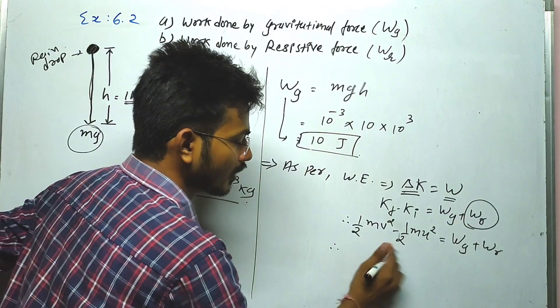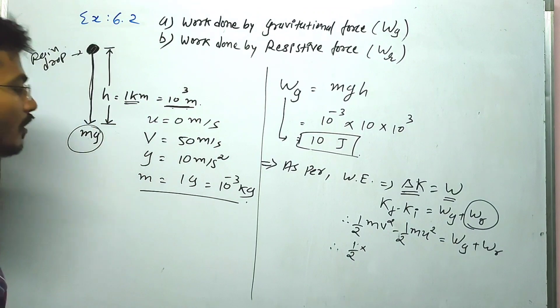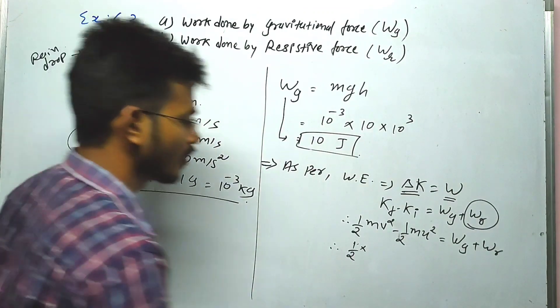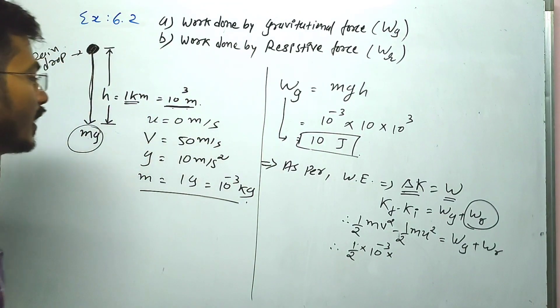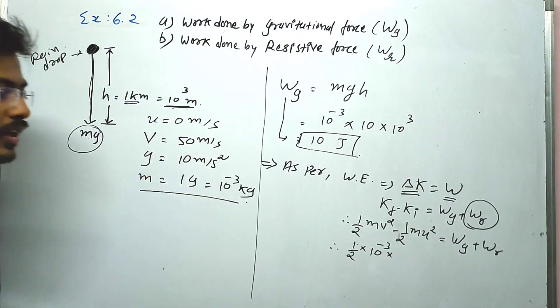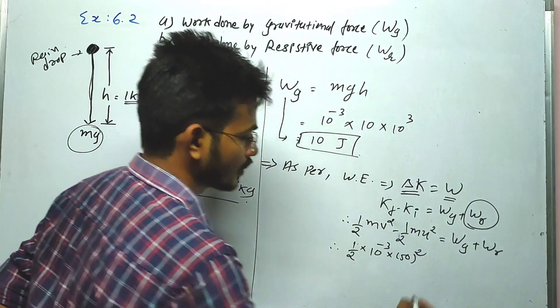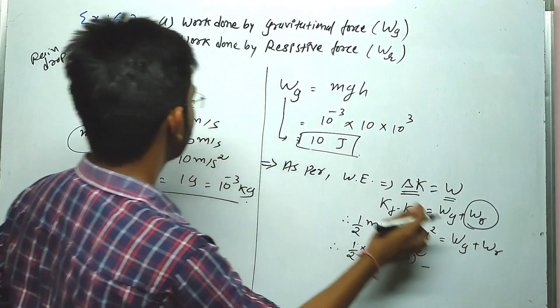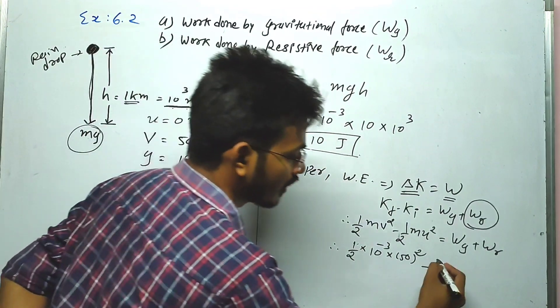Now we put all the values. One half multiplication of m, which is 10 raise to minus 3, multiplication of v, which is 50. So 50 squared minus u. U is 0, so the entire u term becomes 0.